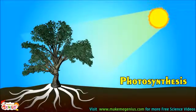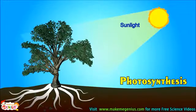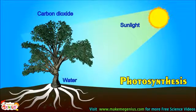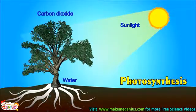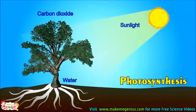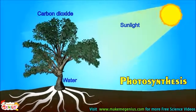Plants are the only living species who make their own food. They use sunlight, carbon dioxide from air, and water from soil to make their food. This process is called photosynthesis. So plants make their own food, and all other species, like animals and we humans, are dependent on plants.